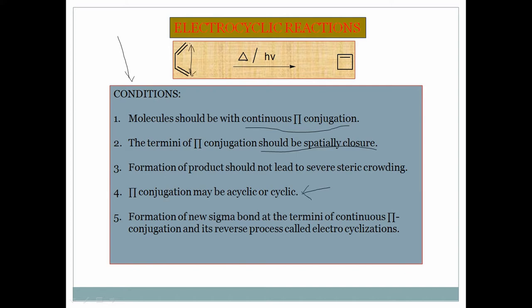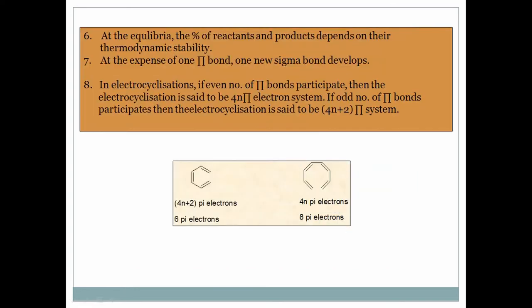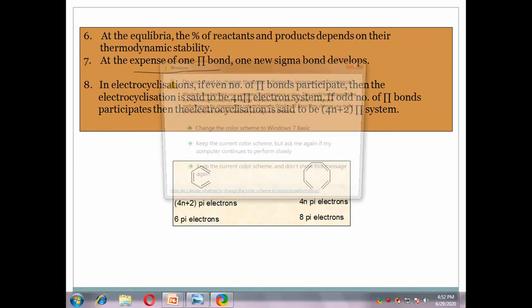Formation of a new sigma bond is occurring at the terminal ends of the conjugated pi system — and its reverse process is called electrocyclization. In electrocyclization there is a sigma bond between C1 and C4; in the reverse process the sigma bond is broken and another pi bond is generated. So in electrocyclization, one pi bond is broken and a sigma bond is generated — at the expense of one pi bond you are getting one sigma bond.